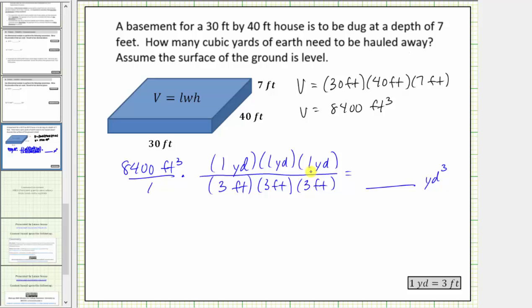Notice by forming the unit fraction with three conversion factors, we now have feet cubed in the denominator as well as the numerator. So the units of feet cubed simplify to one. Also notice how we're left with yards times yards times yards which does give us the correct units of cubic yards.